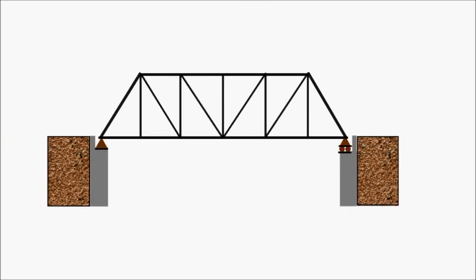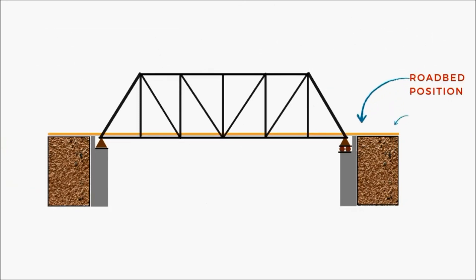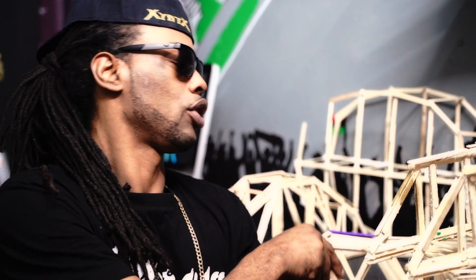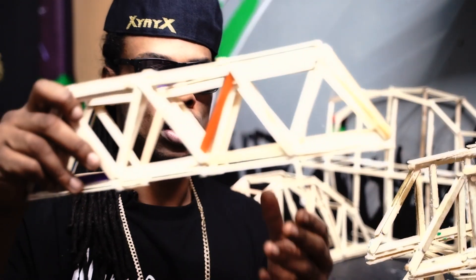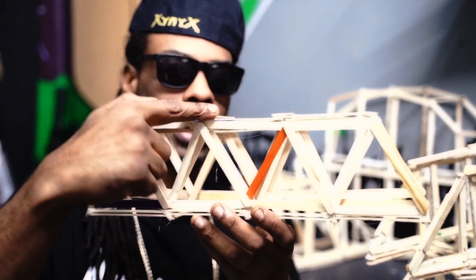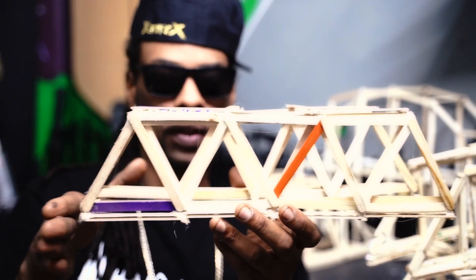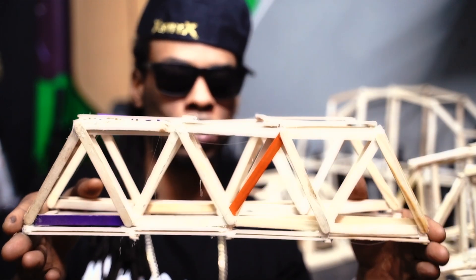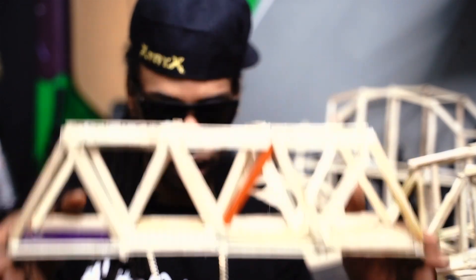There's the bottom cord — which is the floor or deck — and the top cord. And the legs, which make up the walls. You have your bottom cord, top cord, and these positions here would be your abutments, which affix the bridge to the areas you're trying to connect.